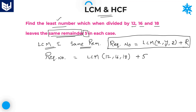Here, the numbers given in the problem are 12, 16, and 18, and the remainder is given as 5. So the required number is equal to LCM of 12, 16, and 18 plus remainder 5. Now we can calculate the LCM of these three numbers.